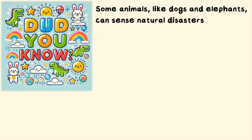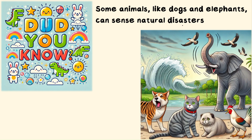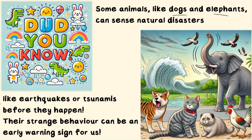Some animals like dogs and elephants can sense natural disasters. Yes — dogs and elephants can sense natural disasters like earthquakes and tsunamis before they happen. Their strange behavior helps provide early warning signs.